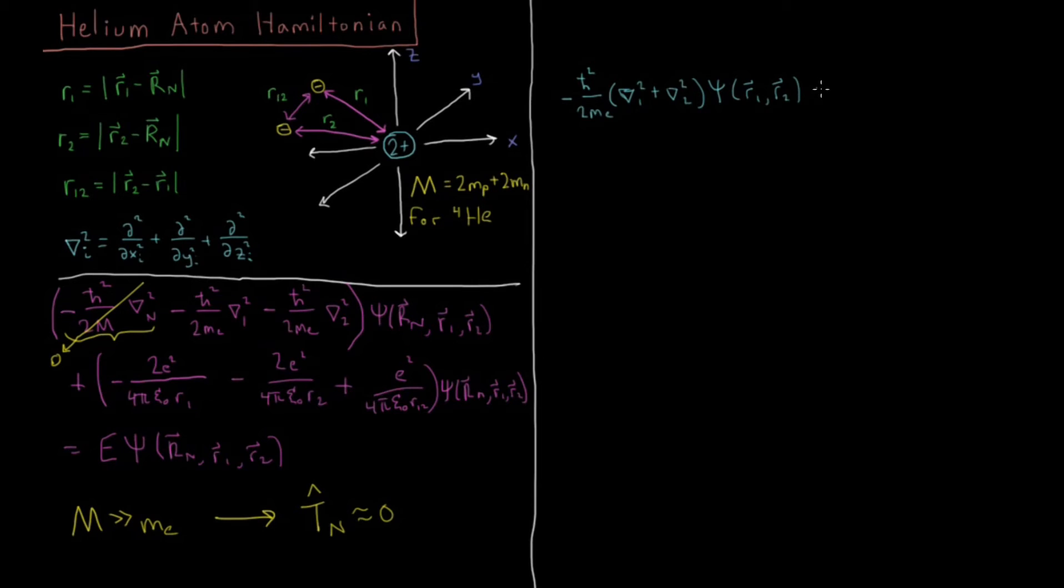Then we have minus each electron's attraction to the nucleus, those terms we saw before. And that factors out into 1 over r1 plus 1 over r2. Again times ψ. And then plus the repulsion of the electrons to each other, e squared over 4πε₀r12, times ψ of r1, r2, equals Eψ of r1, r2.